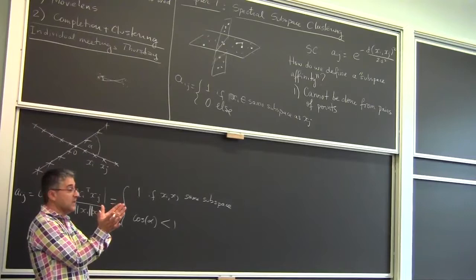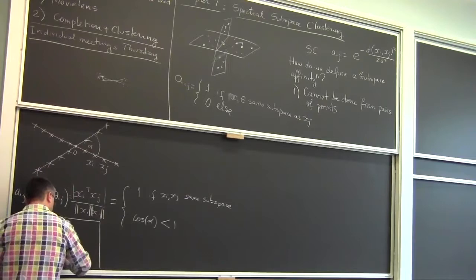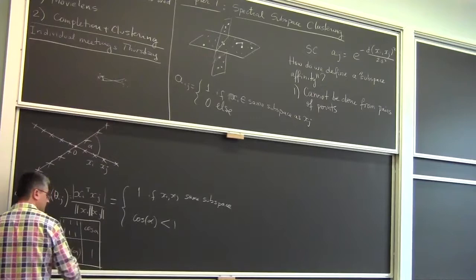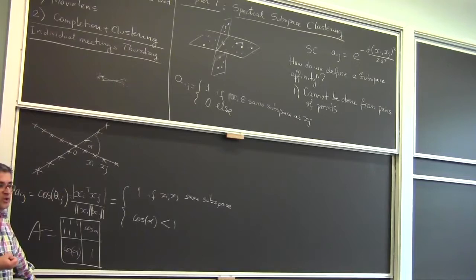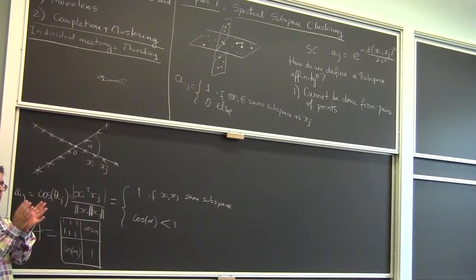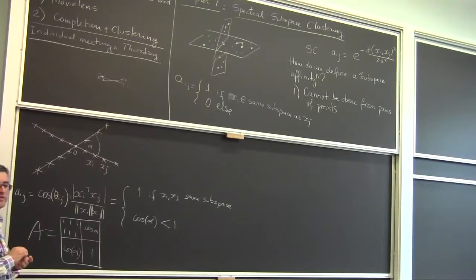This affinity matrix will be 1 everywhere within the same subspace, and cosine-alpha across subspaces. The points in the same subspace have a strong connection of 1, and points in different subspaces are still connected but with cosine of alpha. Eventually it will probably fail once alpha gets close to zero, but with alpha closer to 90 degrees it works well. So for two lines, you can apply spectral clustering if you're clever about defining your affinity.